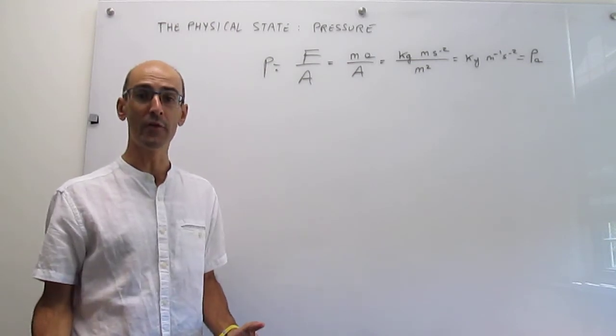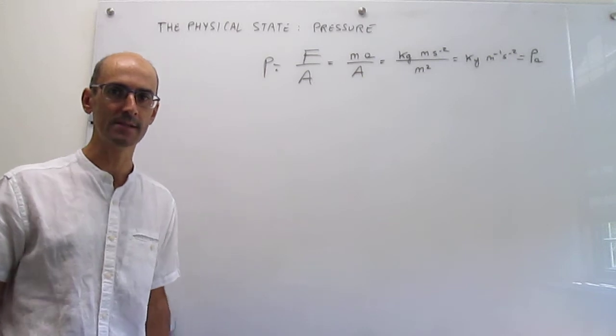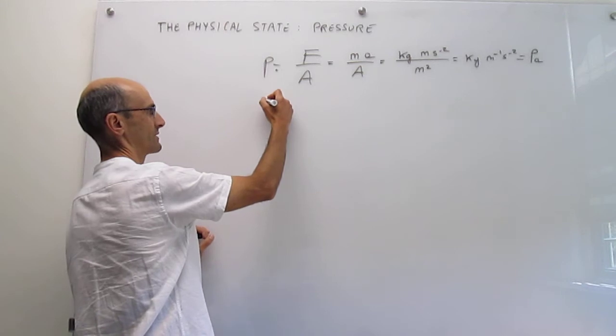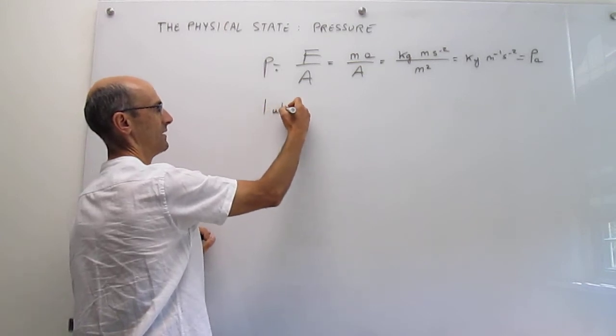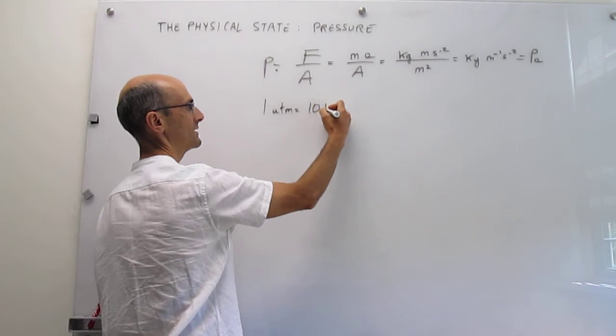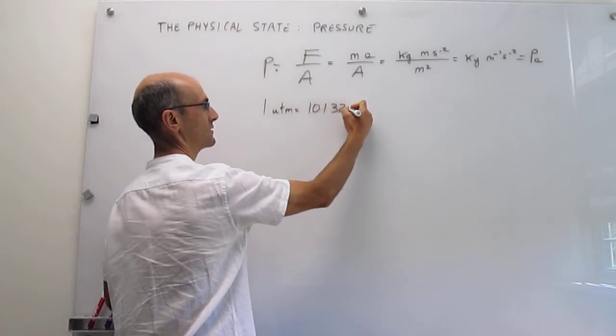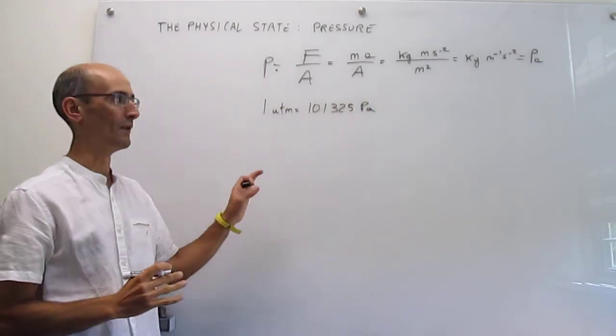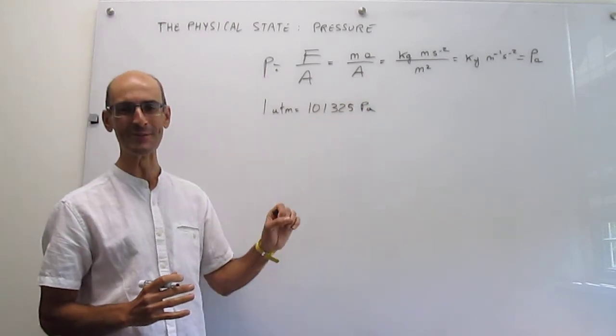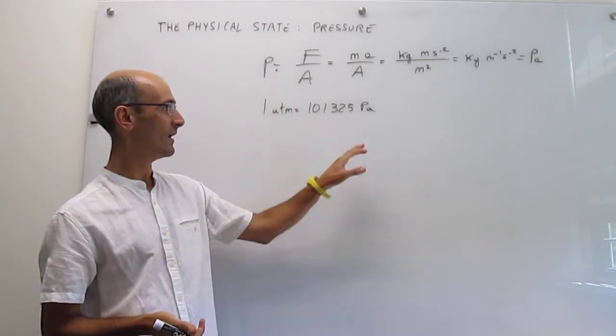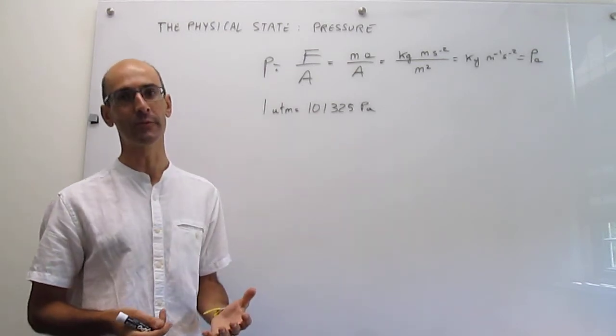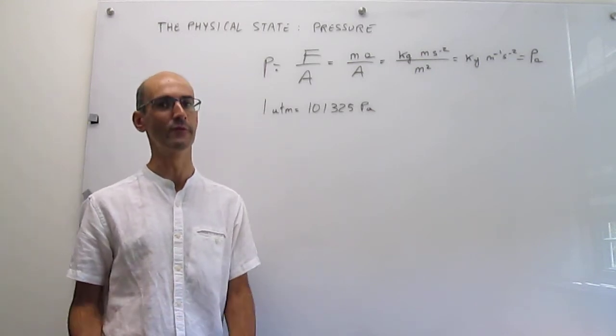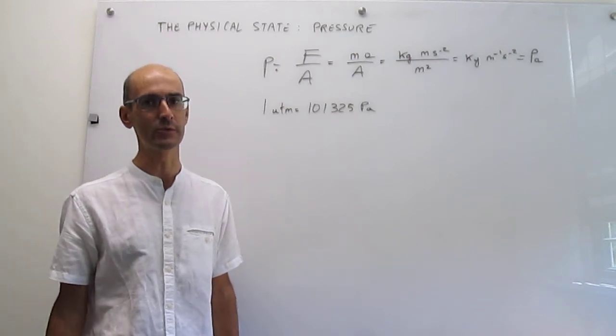Now there are many other units for pressure that we will be using throughout this course. For example, the atmosphere is one of them, and the conversion between atm and Pascal is one to 101,325. As you can see, there's a large conversion factor between these two pressure units, which means that either Pascal is a very small unit of pressure or that one atmosphere is actually a large amount of pressure, and both can be argued to be actually true.